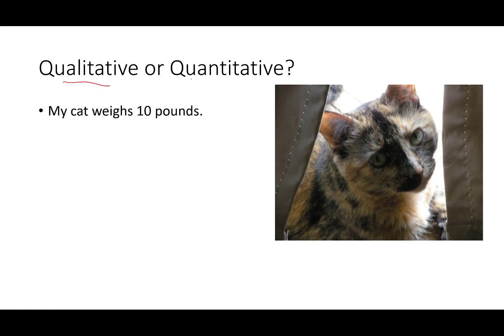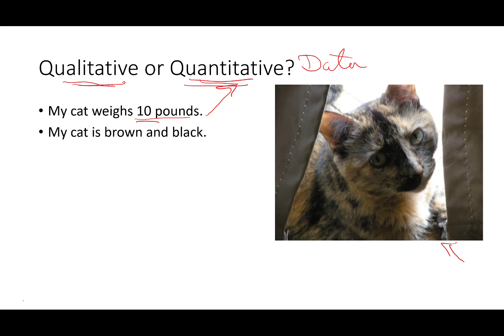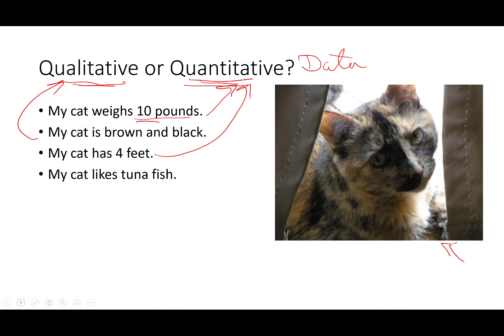Let's see if you've got this. This is a picture of my cat, Maudie, and I'm going to give you some information about her. 'My cat weighs 10 pounds' — quantitative, because that's a number. 'My cat is brown and black' — qualitative, no numbers involved. 'My cat has four feet' — quantitative, that's a numerical piece of data. 'My cat likes tuna' — qualitative. All of these pieces of data are important; some happen to be numeric and some happen to be non-numeric — just different kinds.